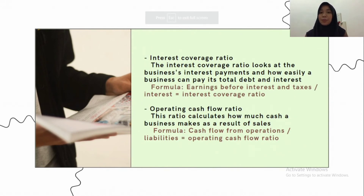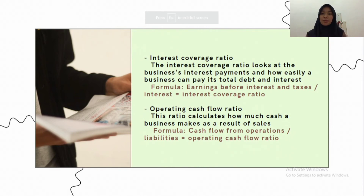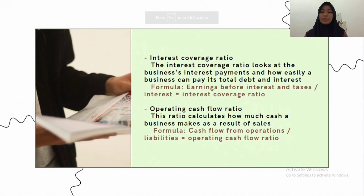The interest coverage ratio looks at the business's interest payments and how easily a business can pay its total debt and interest. A business should strive to have a number above one. The formula for calculating the interest coverage ratio is: earnings before interest and taxes (EBIT) divided by interest expense.